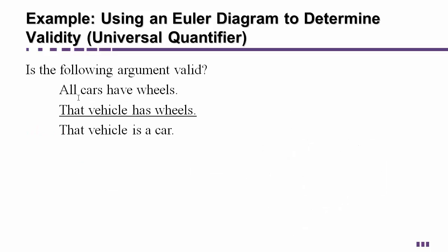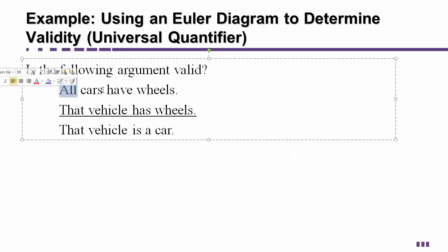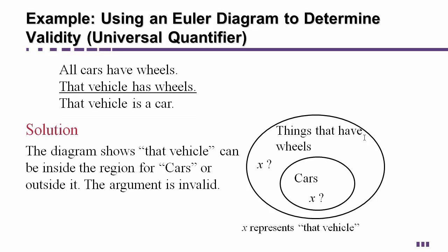Another universal quantifier with all. All cars have wheels. That vehicle has wheels therefore that vehicle is a car. Draw the picture.